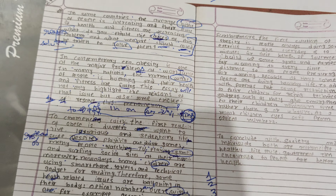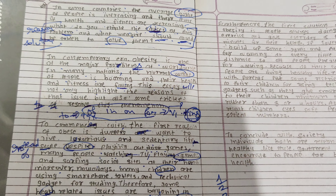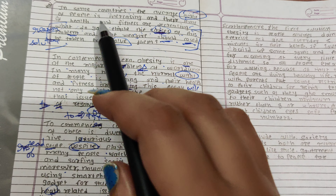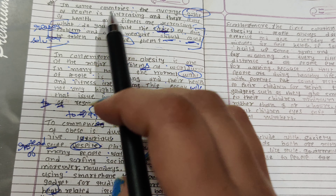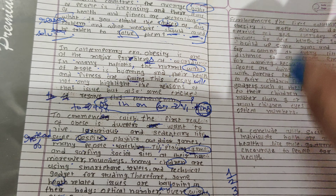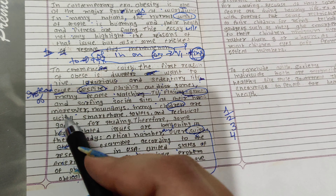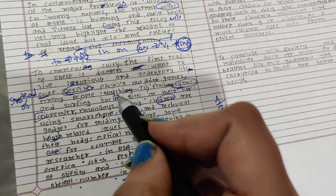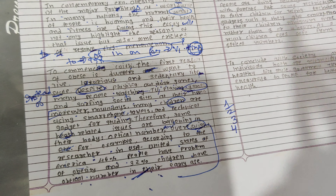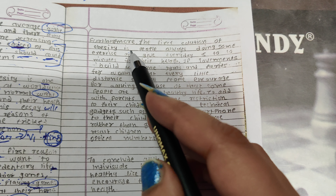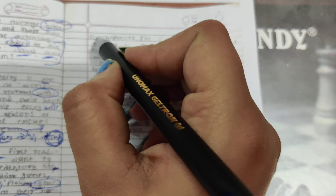See, you have two reasons: number one, average weight increase; number two, fitness decrease. You need to connect them. Use transitions like 'moreover,' 'in addition to this,' 'apart from this,' or 'furthermore.' Despite the major reason behind this problem, some solutions can be implemented to eradicate this issue — use the 'despite' structure carefully.